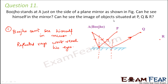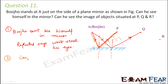Can we see the image of objects situated at P, Q, and R? For point P, a ray of light incident from P gets reflected like this, going toward Bujo. So the reflected ray from P is able to reach Bujo's eyes — therefore Bujo can see the image of P.